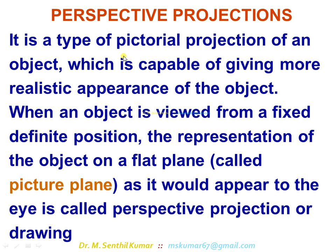It is one of the pictorial projections. In a single view, you are able to see the three-dimensional shape and size of the object. The observer is fixed at a definite position. In orthographic or even isometric projection, we have taken the assumption that the observer for both front view and top view must be stationed at infinite distance, so that vision rays are parallel to each other. But here the observer is at a definite position. The position of the observer's eye point is also very important.